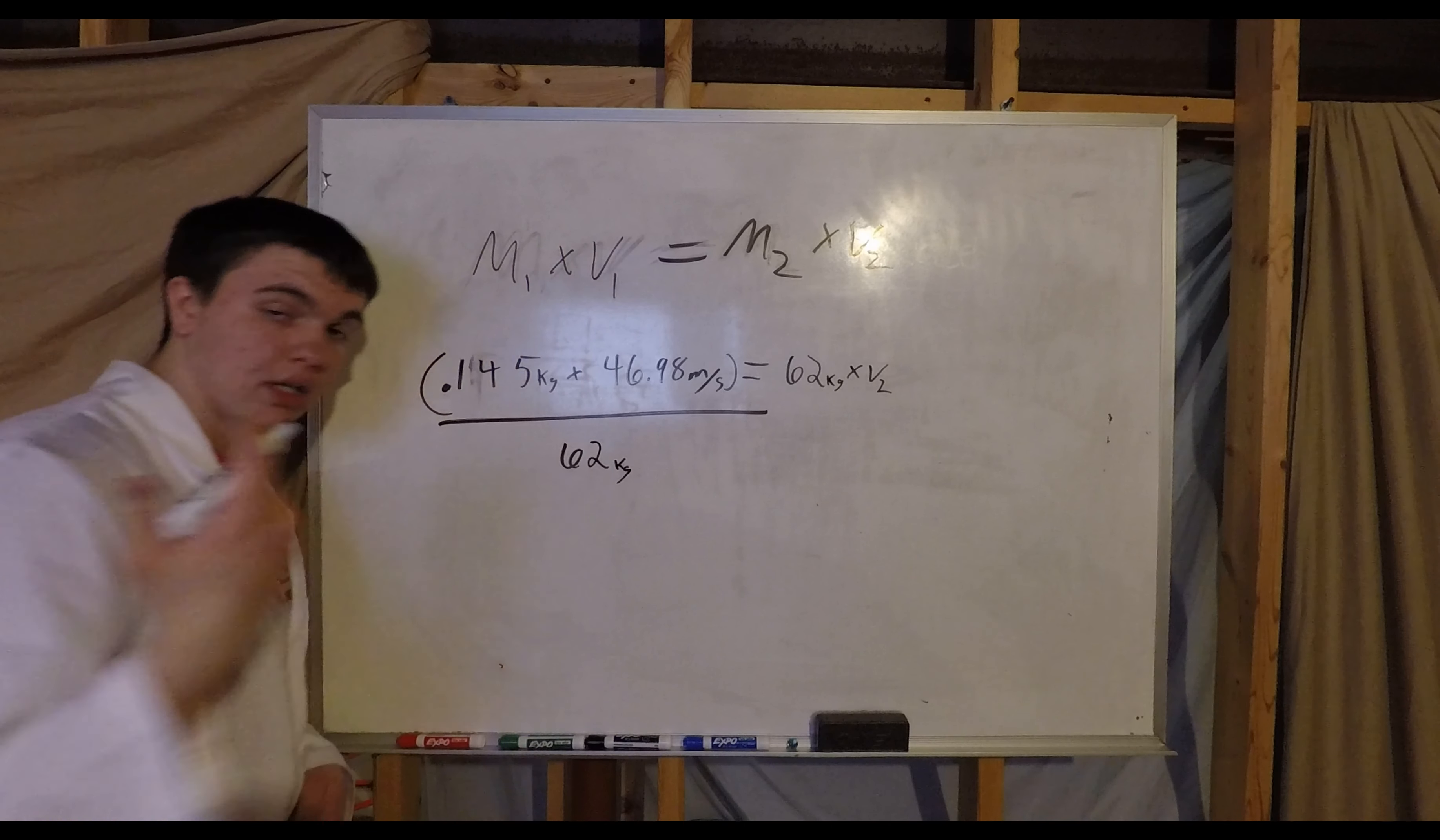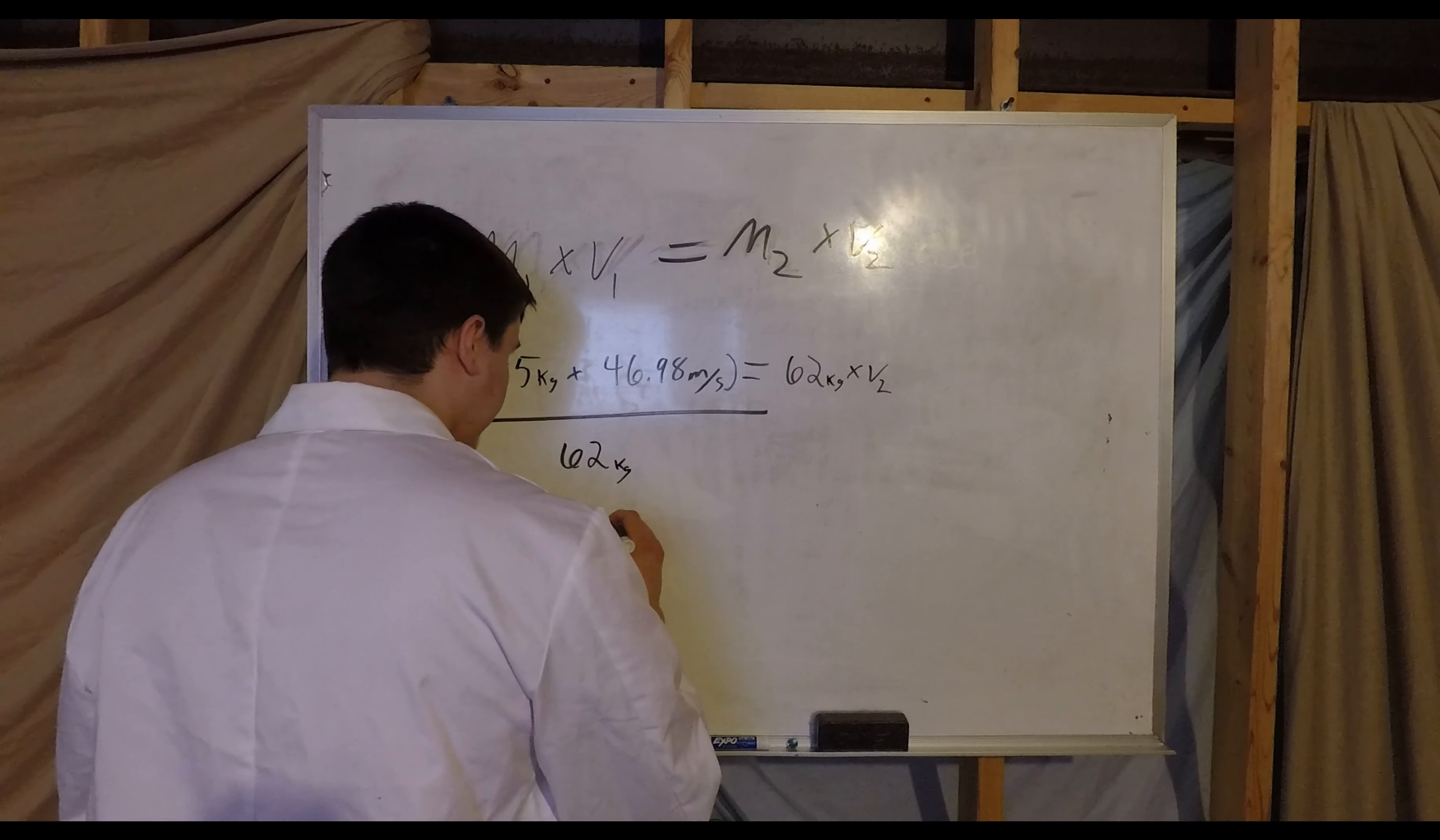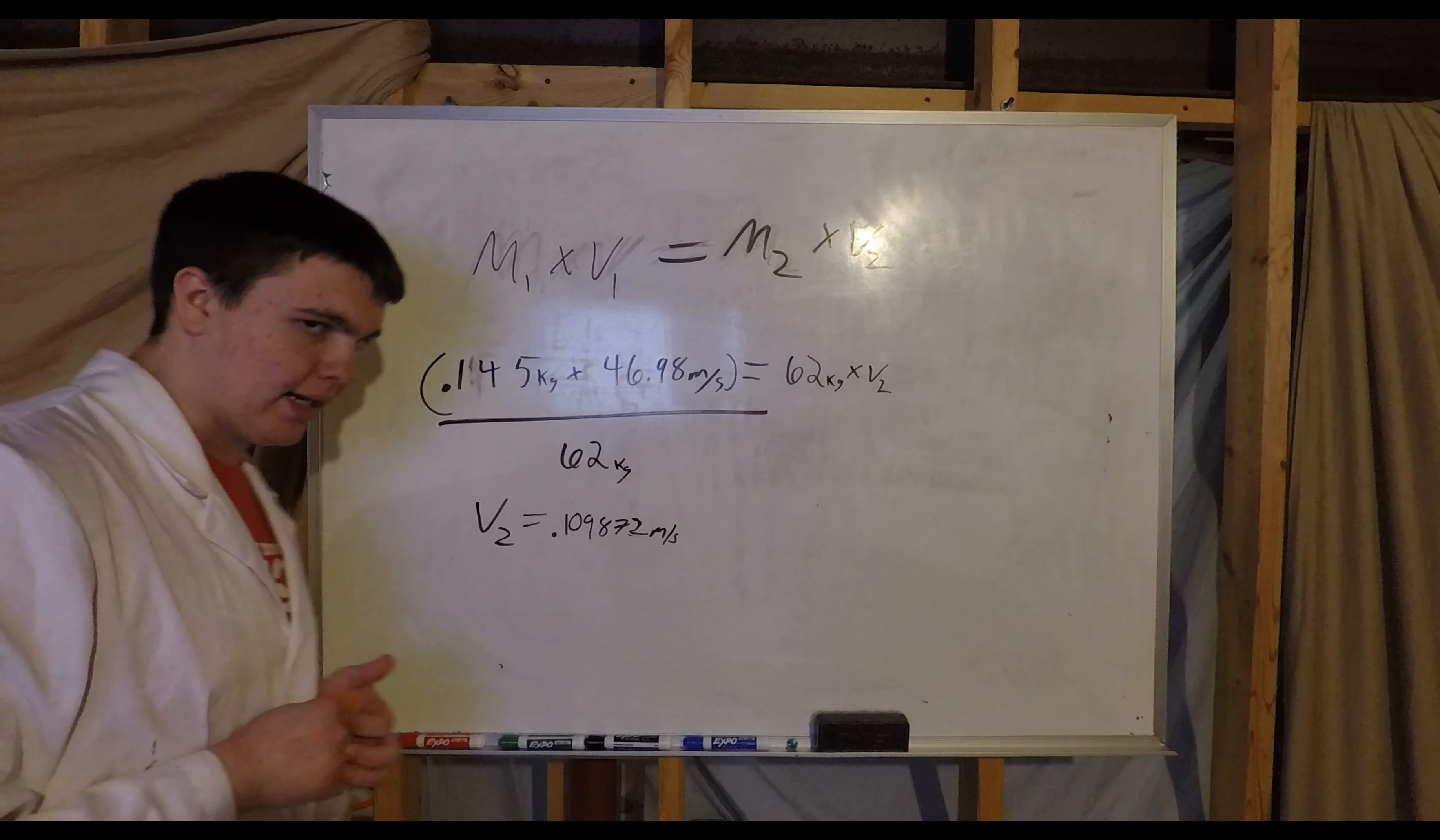Now that'll give us V2. And our final velocity of our baseball player is, drum roll please, 0.109872 meters per second. Yeah, you're not going anywhere. Not anytime soon.